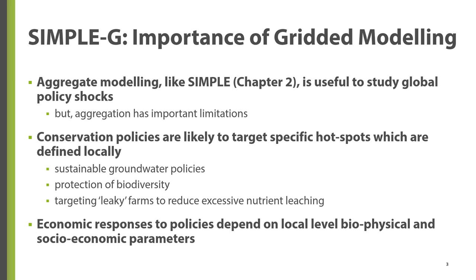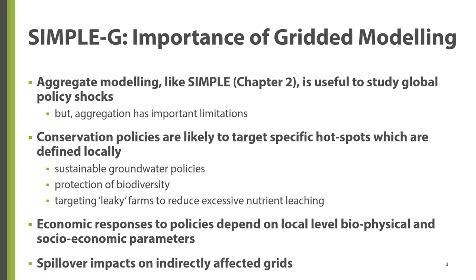Second, the appropriate responses to sustainability policies depend on the site-specific biophysical and socio-economic characteristics. In this chapter, we contrast the differences in the impact of a given conservation policy in a resource-abundant versus resource-scarce context. Third, localities that aren't directly targeted by the policy could be indirectly impacted due to spillover effects, which often lead to unintended policy consequences that are important to understand for equitable and effective policy design.